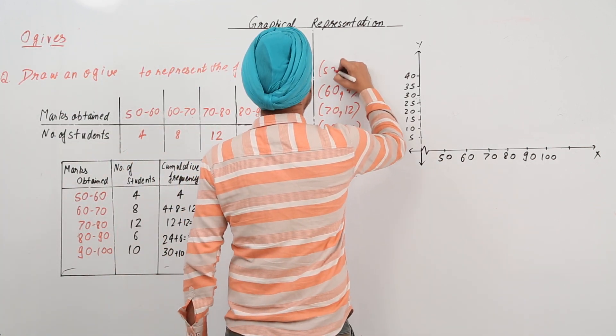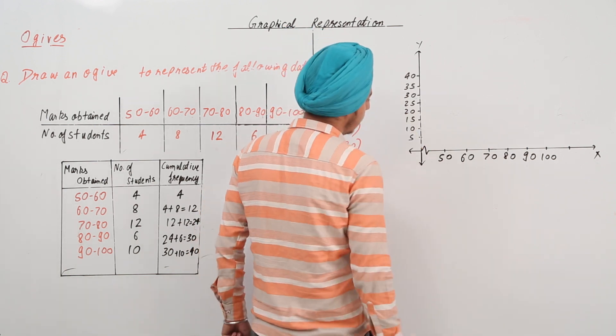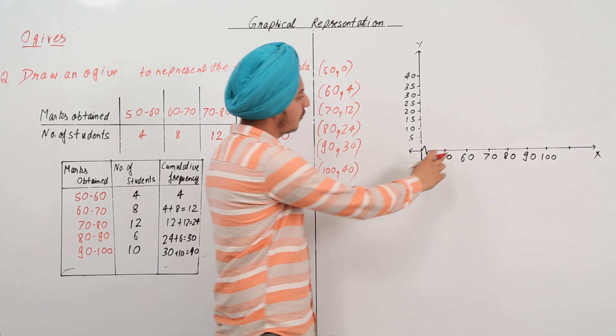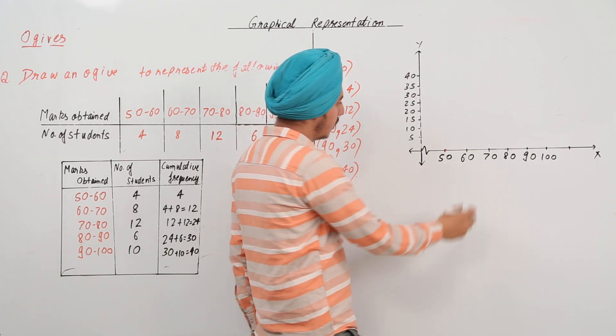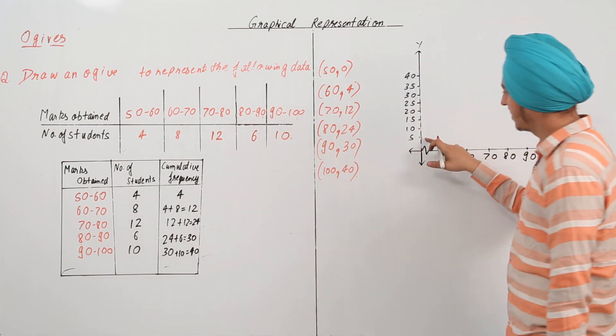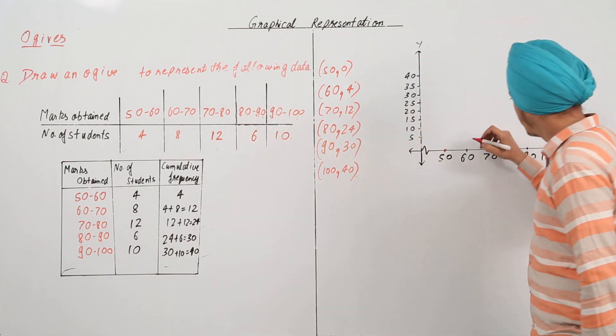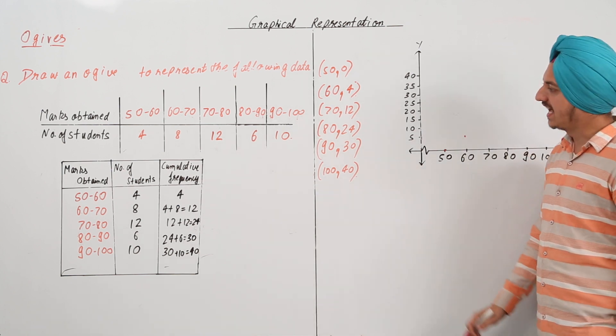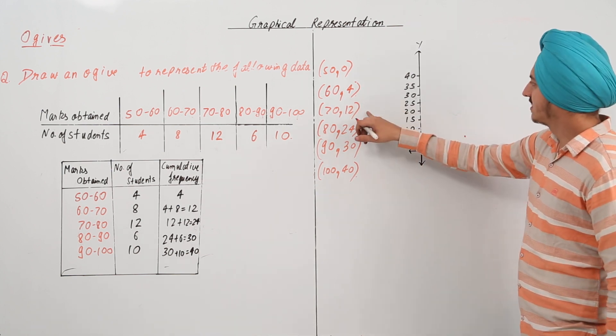So, the first point is 50, 0. This is the first point. Next point is 60, 4. So, this is 60 and 4 will be somewhere over here. That will be just a unit less than 5. So, 60, 4 will be here.